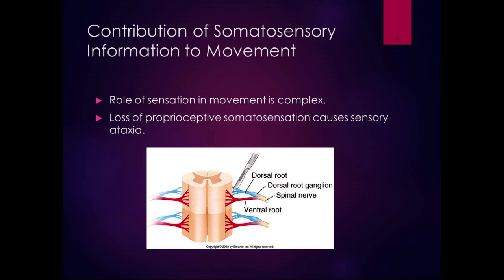Somatosensation contributes to smooth, accurate movements and to the prevention or minimization of injury and to our understanding of the external world. A lot of the somatosensory information is not consciously perceived, but it's processed at the spinal cord level in local neural circuits or by the cerebellum to adjust movements and posture. Information from the muscle spindles, Golgi tendon organs, and joint capsules is going right to the cerebellum — it's non-conscious, being used in the background to keep us balanced. That's carried in a non-conscious tract, and our perceived sensory information is carried in a different tract.